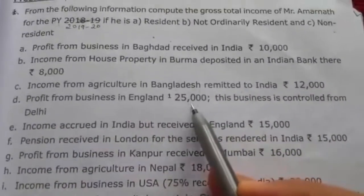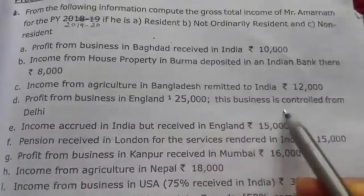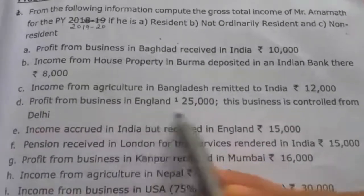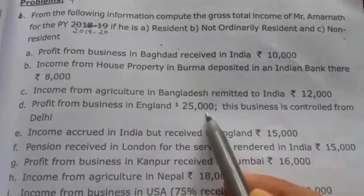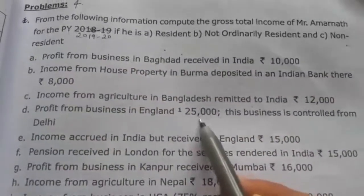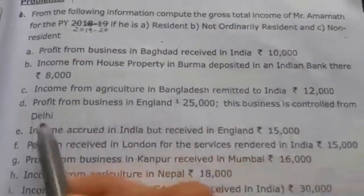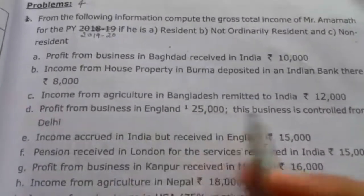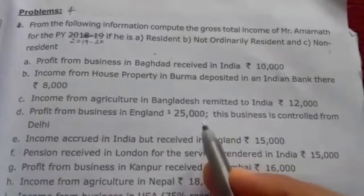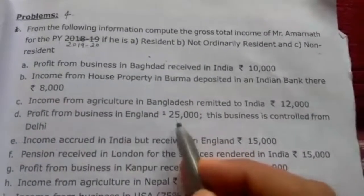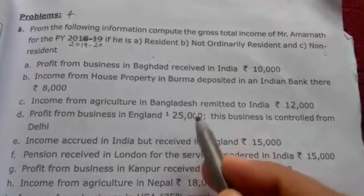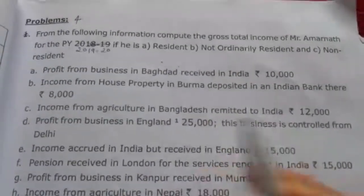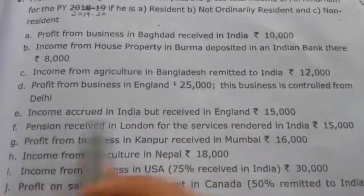Fourth, profit from business in England Rs. 25,000, controlled from Delhi. Since the business is in England it is foreign income, so Rs. 25,000 is taxable in the hands of the ordinarily resident. Because it is controlled from Delhi, it is also taxable in the hands of the not ordinarily resident. It is not taxable in the hands of the non-resident since it is not received in India. So it appears in the first two columns only.